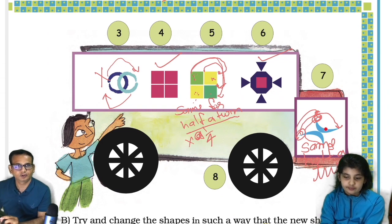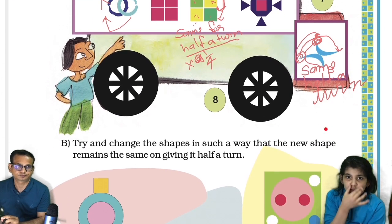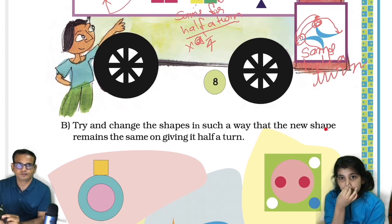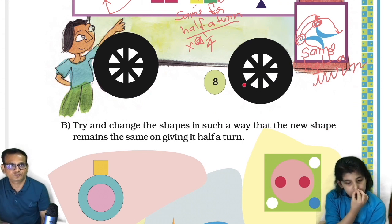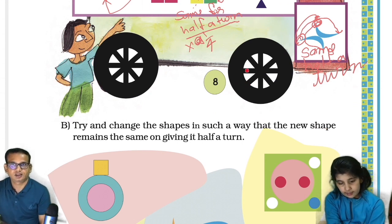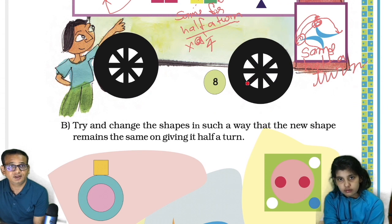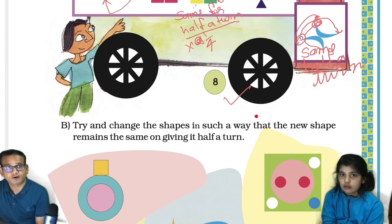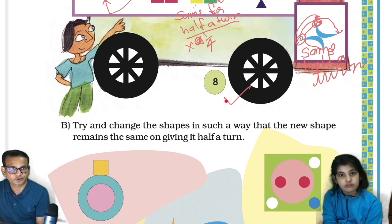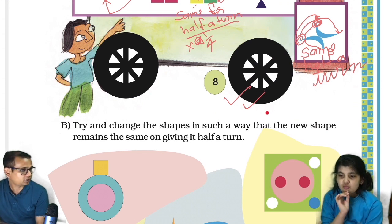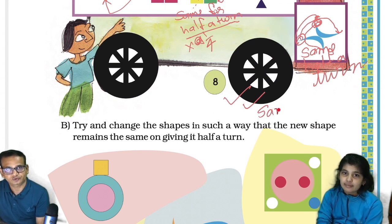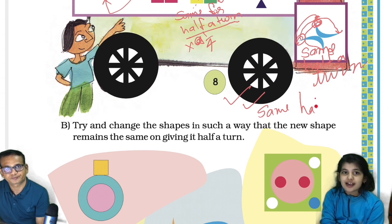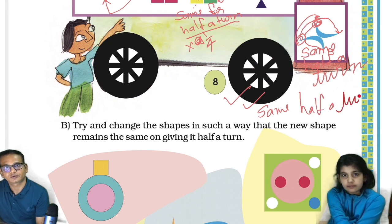Now we'll go to the eighth one. The eighth one is nothing but this wheel. After a half turn it will be the same, and even after a quarter turn also it will be the same. So we take it — after a quarter turn it will be the same, and after a half turn also it will be the same. Have you understood?